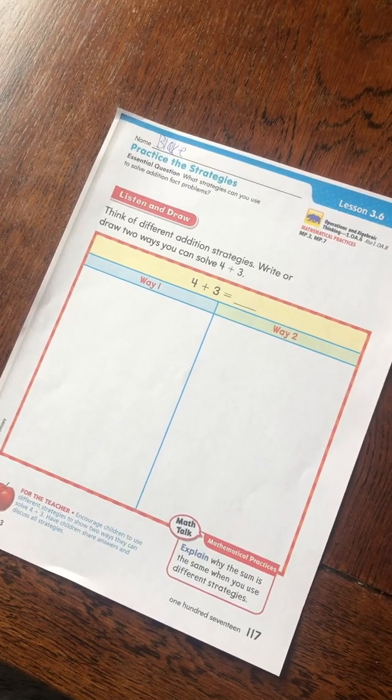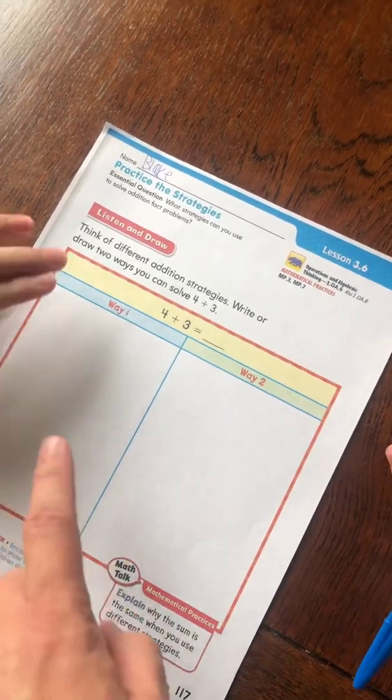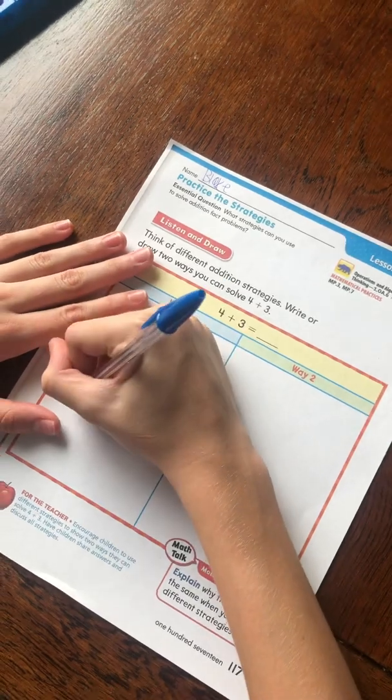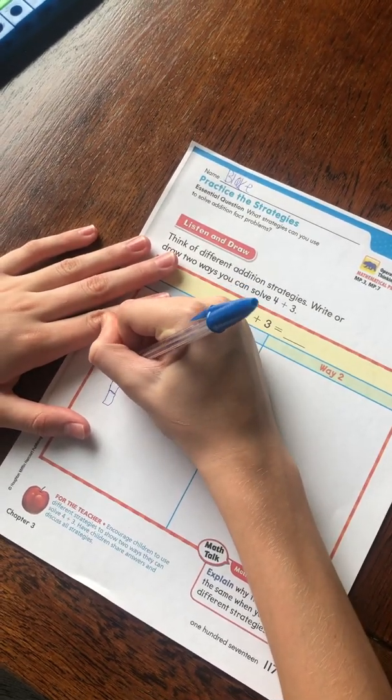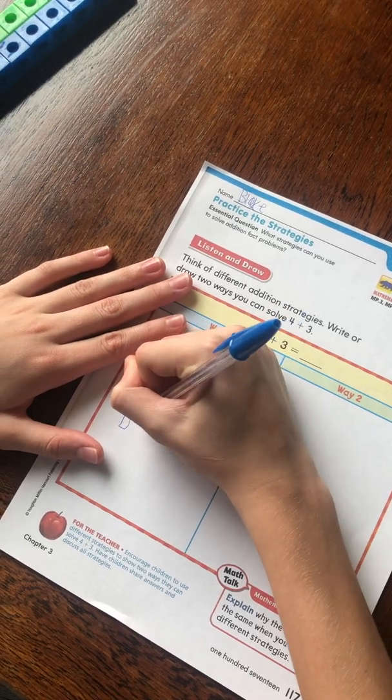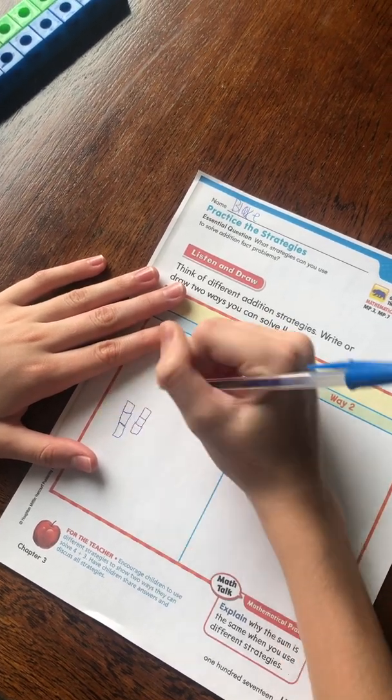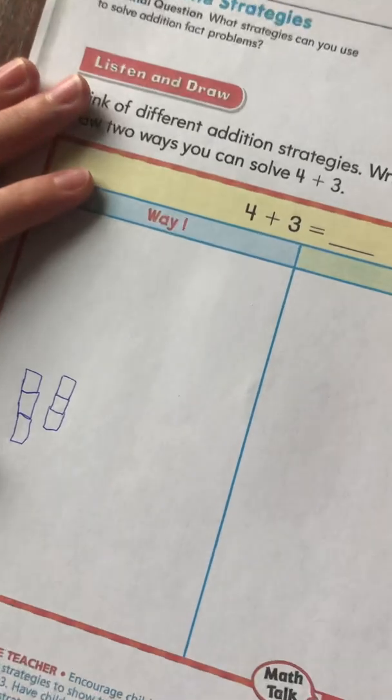Okay, so the doubles fact would be 3 plus 3. So let's draw 3 blocks and then 3 blocks. So that is a doubles fact.